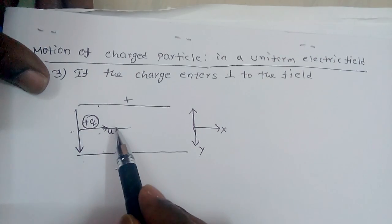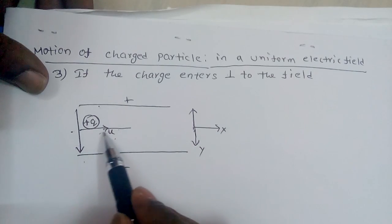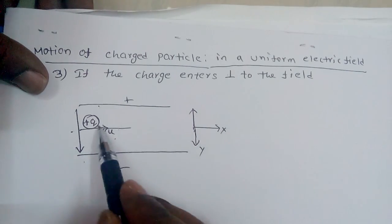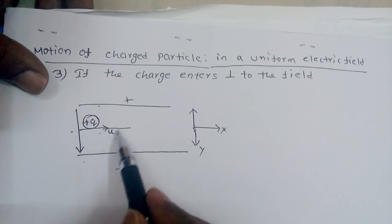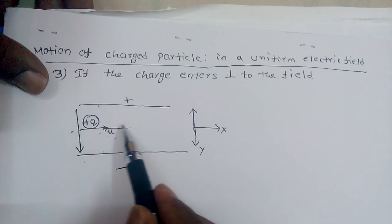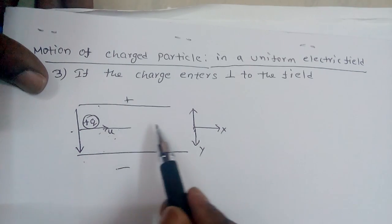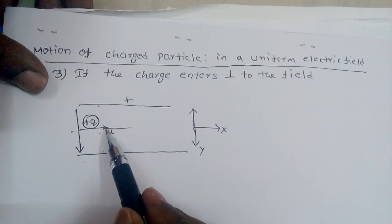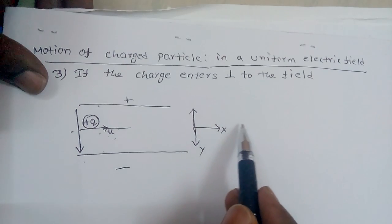The charged particle enters perpendicularly with velocity u. Along the x direction, there is no electric field, hence it does not experience any force due to the electric field. Because there is no electric field in the x direction, acceleration is zero, and therefore there is no change in velocity. The particle moves with constant velocity in the x direction.